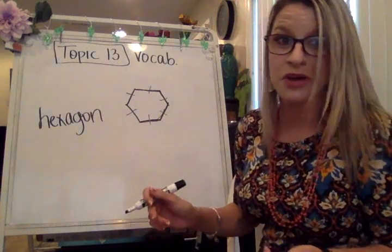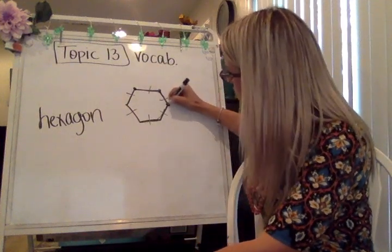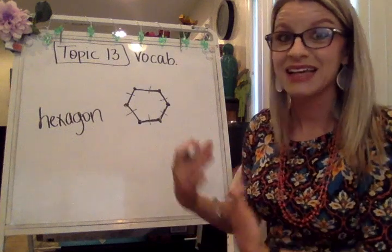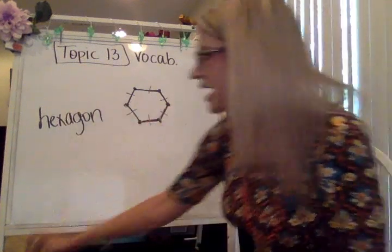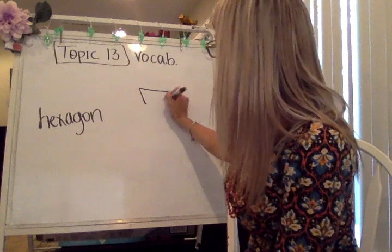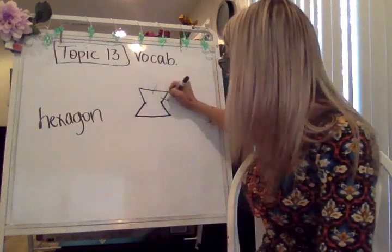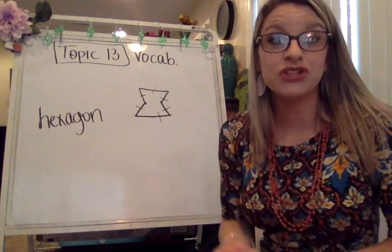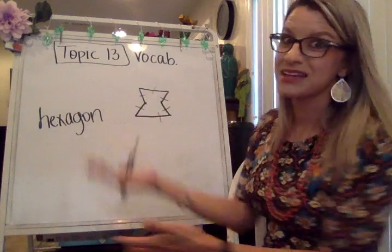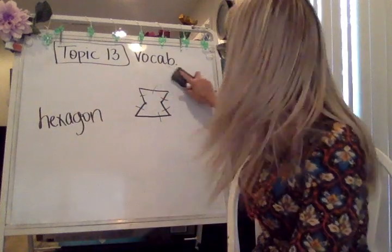Just to make sure you still remember about vertex — if I was asked how many vertices this hexagon has, I count one, two, three, four, five, and six, so we've got six vertices and six sides. Here's another hexagon example; counting the sides: one, two, three, four, five, and six — this is also a hexagon with six sides. When you're drawing a polygon with many sides, I like putting little marks on each line as I count so I make sure I counted each one only once.